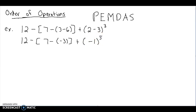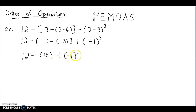We still have a grouping symbol — the bracket. With the parentheses within this bracket taken care of, we now need to take care of that bracket. So it's going to be 12 minus, and in the bracket we do 7 minus negative 3, which is really 7 plus 3, and that comes out to 10. So we're down to 12 minus 10 plus negative 1 to the third power.